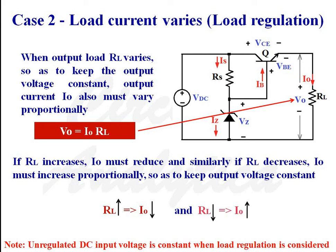Case 2: load current varies — load regulation. When considering variations in load current, we assume input voltage VDC is constant. As load resistance RL varies, to keep output voltage constant, output current I0 must vary proportionally. According to Ohm's law, V0 = I0 × RL. If RL rises, I0 must fall to keep V0 constant. Similarly, if RL falls, I0 must increase proportionally to keep V0 constant.